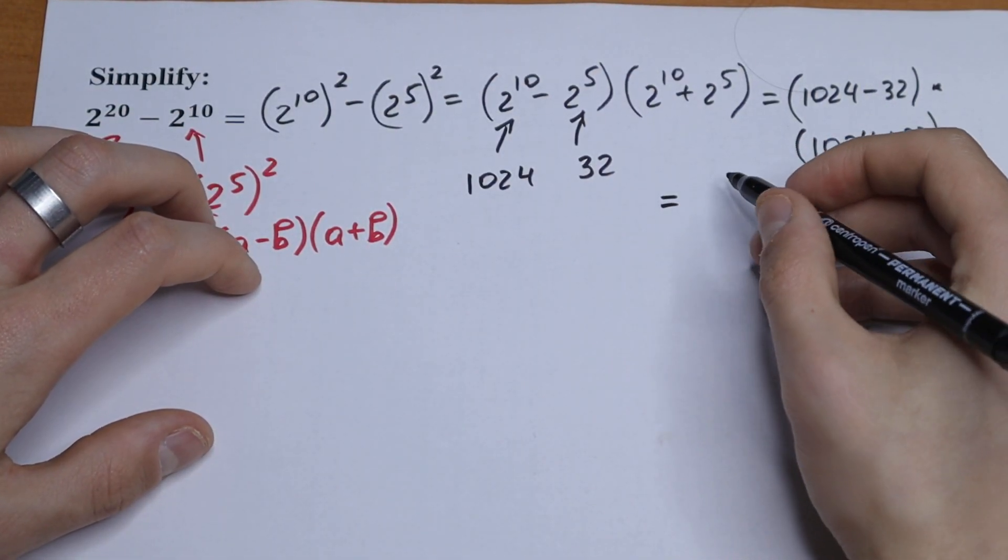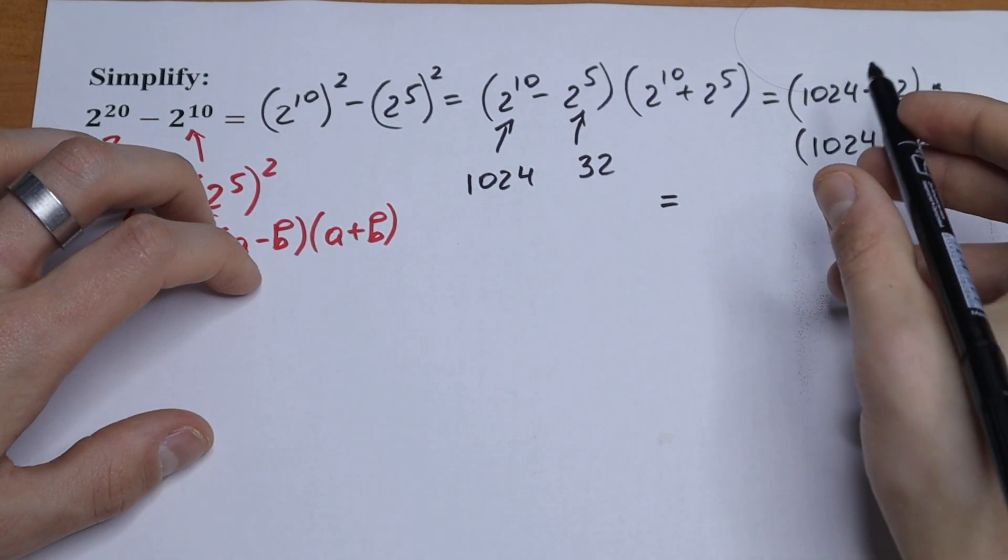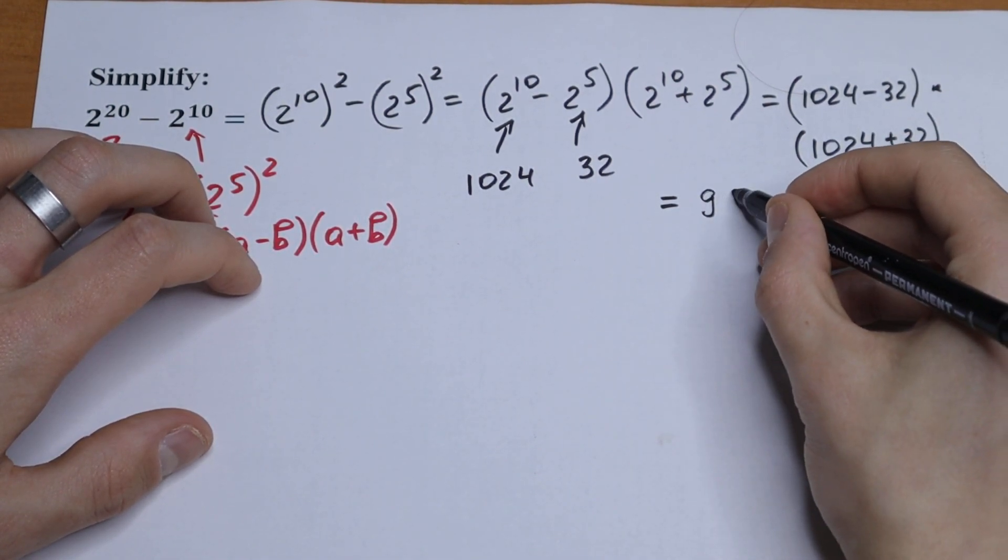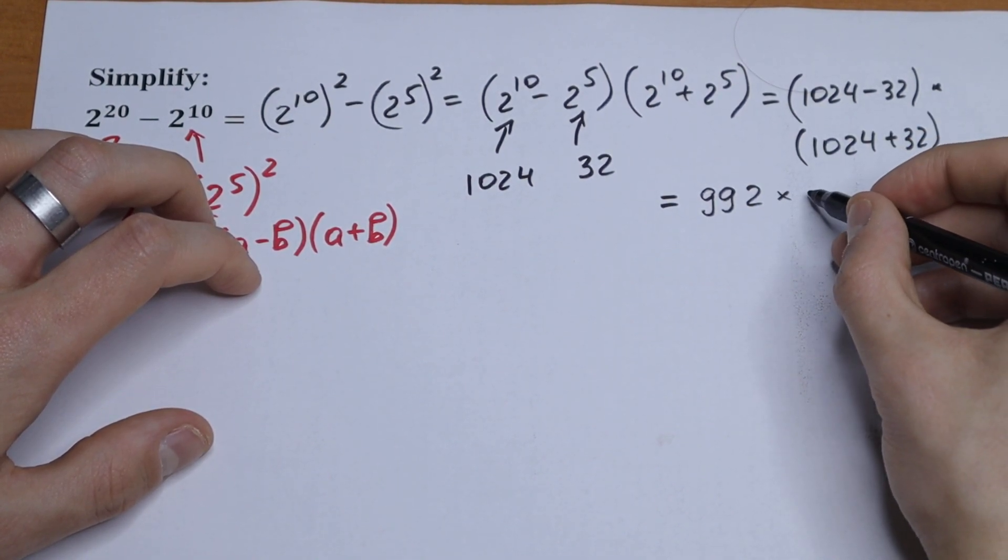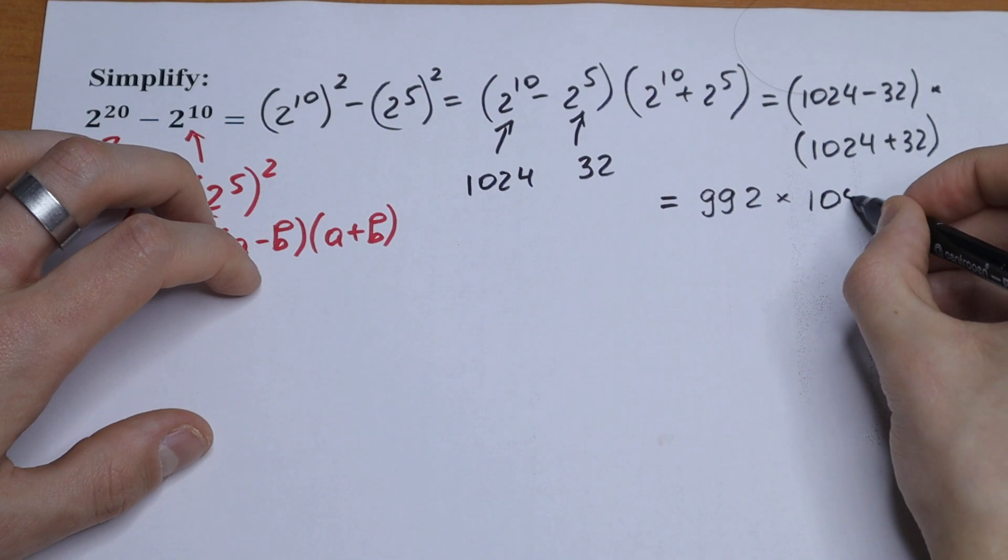So we need to find the product. 1024 minus 32 will be 992, times this sum, we will have 1056.